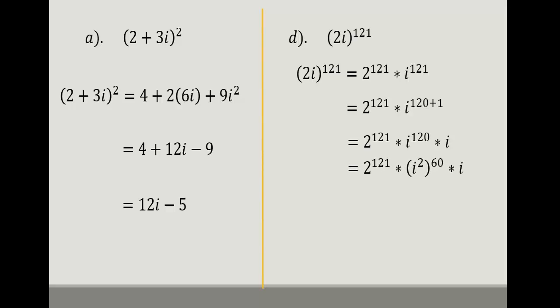We split the power 120 as 2 times 60, so we have 2^121 times (i²)^60 times i. We know that i² equals negative 1, so i² becomes negative 1. And negative 1 to the power 60 becomes positive 1. So our final expression is 2^121 times 1 times i, which finally gives us 2^121 times i.